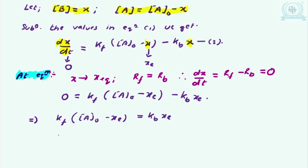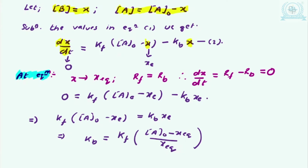Rearranging, kf times (A0 minus x_eq) equals kb times x_eq. From this we can express kb as kf times (A0 minus x_eq) divided by x_eq. Let this be equation 3, and the rearranged form equation 4.